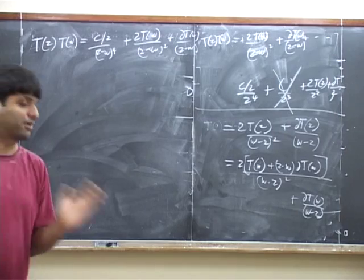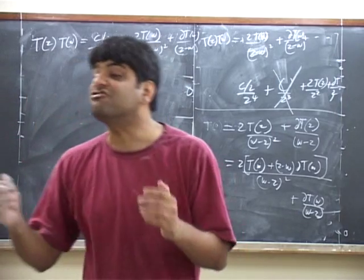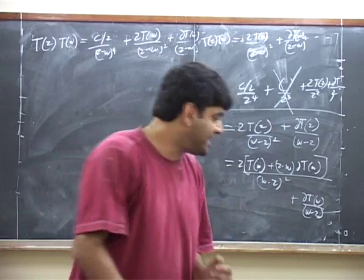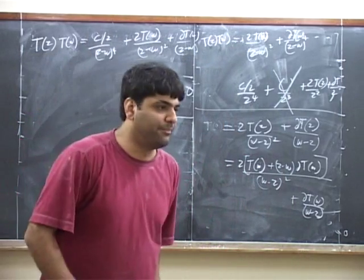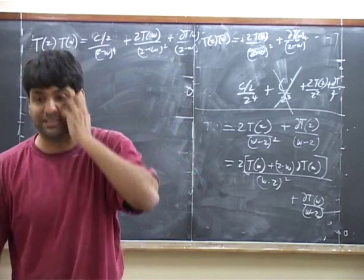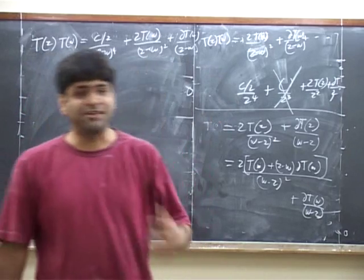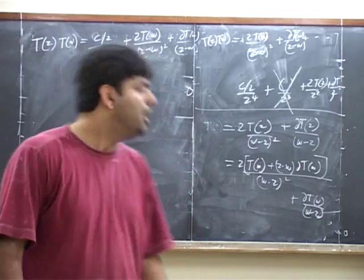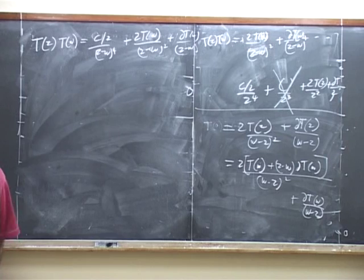This constant c is very important. It has a name—it's called the central charge of the conformal field theory. We will see in the next class, as we continue in string theory, that the central charge is a crucial quantity defining the properties of string theory. But I think we should stop here.